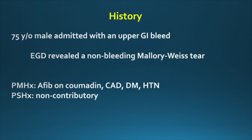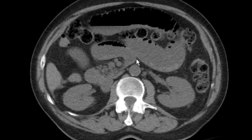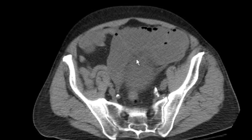Our patient is a 75-year-old male admitted with an upper GI bleed. GI was consulted and performed an EGD, which revealed a non-bleeding Mallory Weiss tear. Past medical history is significant for AFib on anticoagulation, coronary artery disease, diabetes, and hypertension. Two days after admission, he started complaining of abdominal pain, persistently high NG tube output, and right groin pain. A CT scan of the abdomen and pelvis revealed a small bowel obstruction secondary to an incarcerated right femoral hernia.